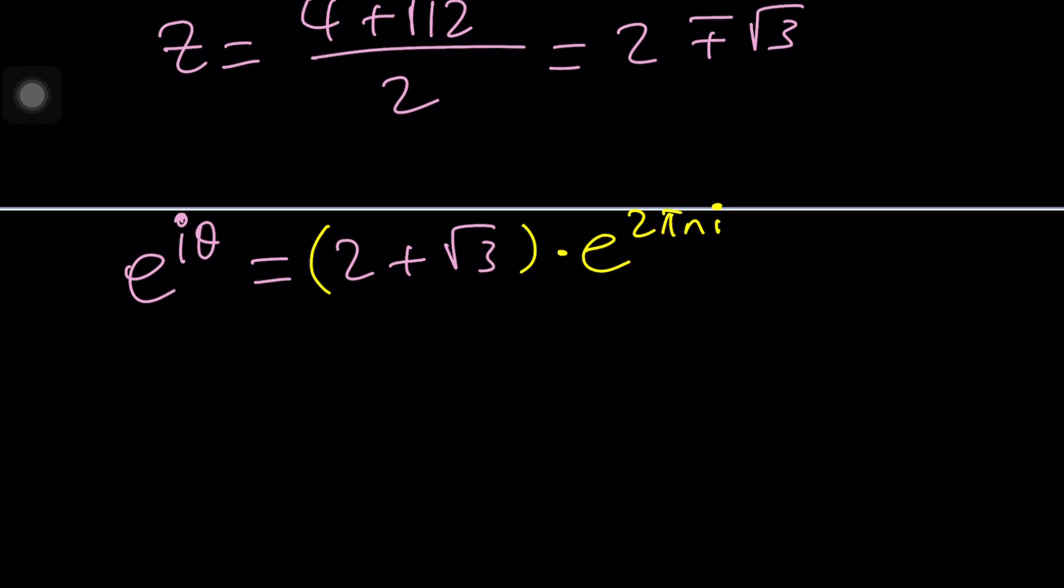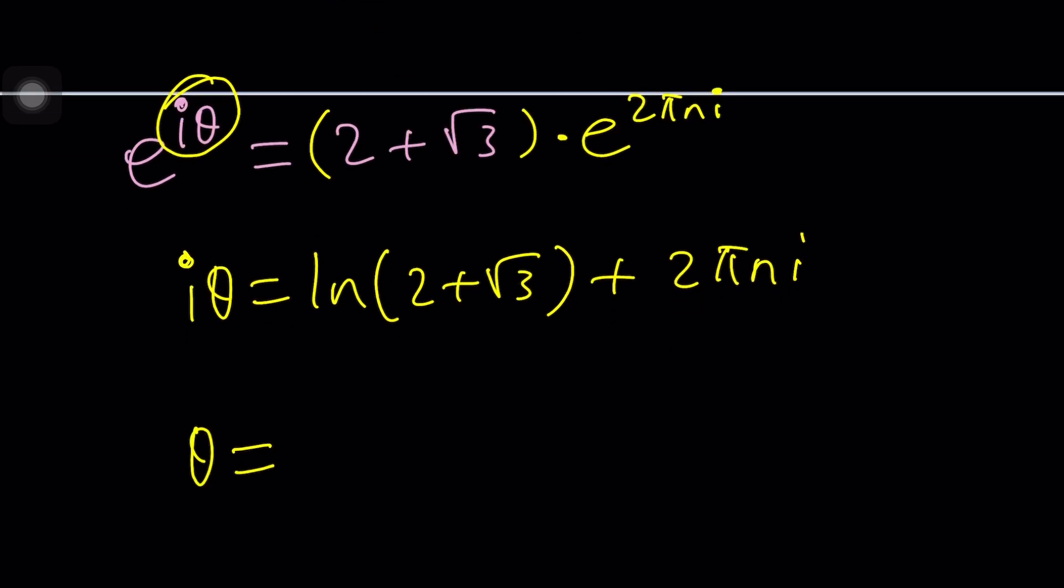And then, here's the natural logs. That's going to give you i theta equals ln 2 plus root 3 plus 2 pi n i. And then, since our goal is to solve for theta, you can multiply both sides by negative i or divide by i. I like to multiply by negative i, because negative i times i is negative i squared, and negative i squared is equal to 1.